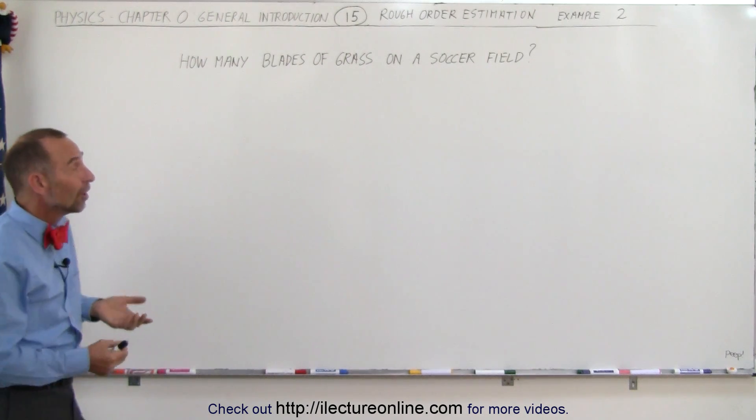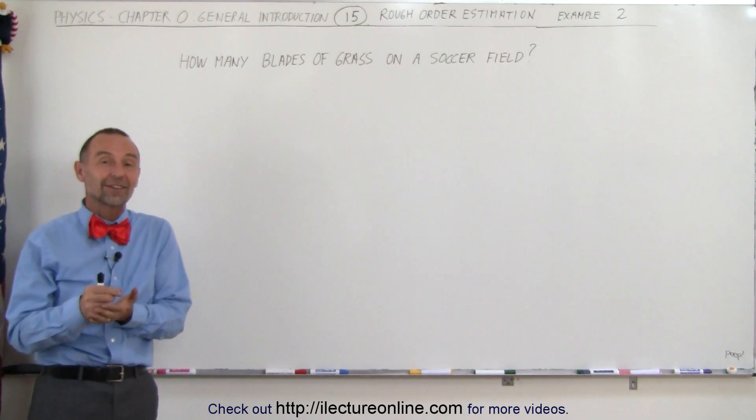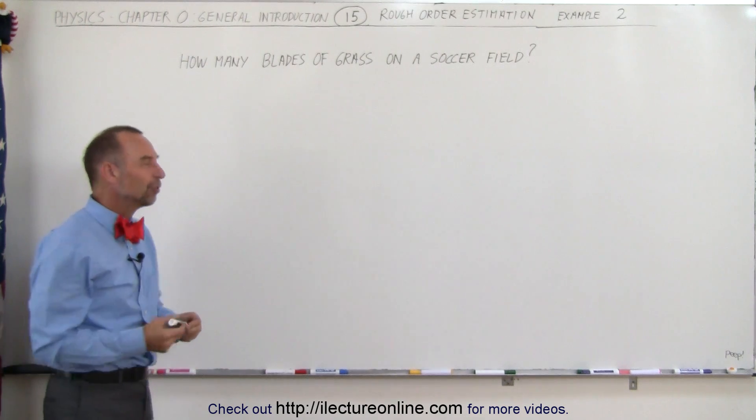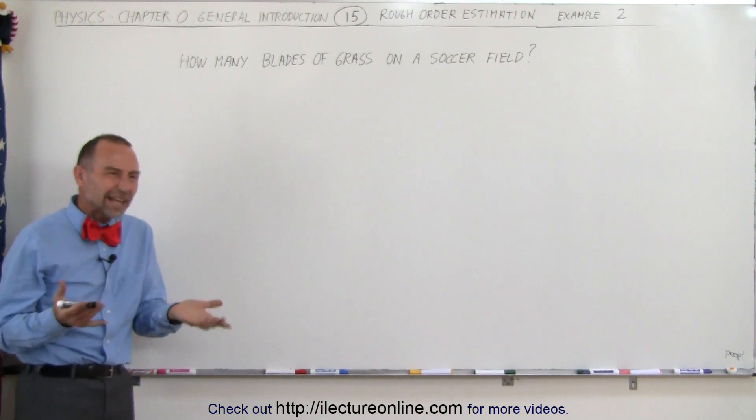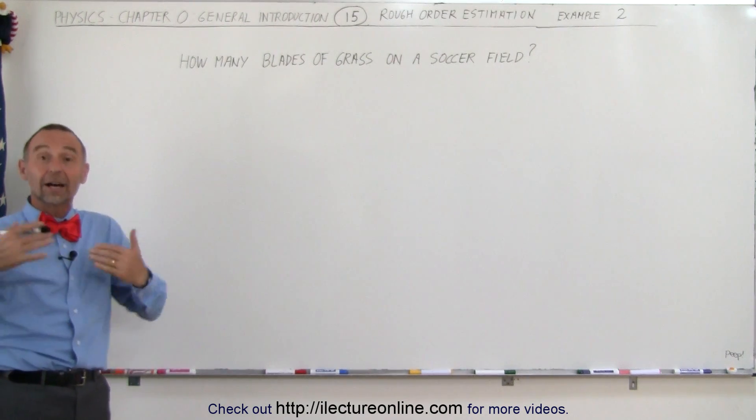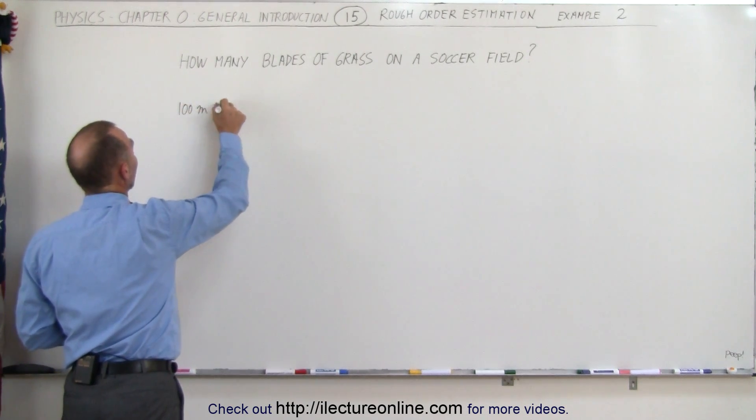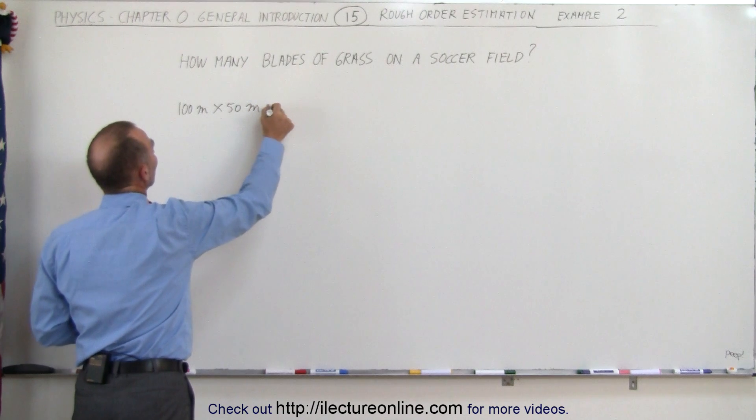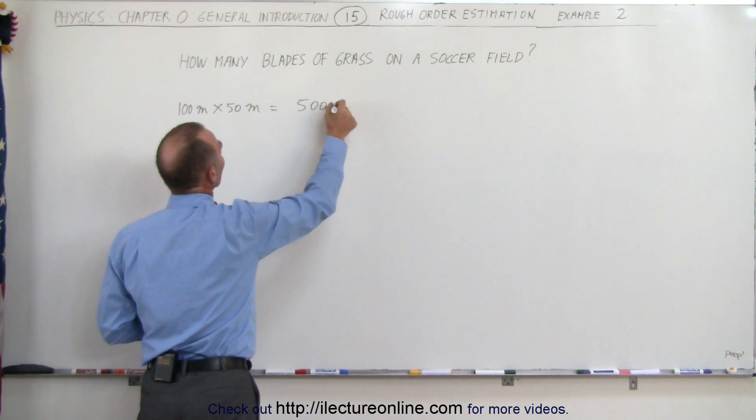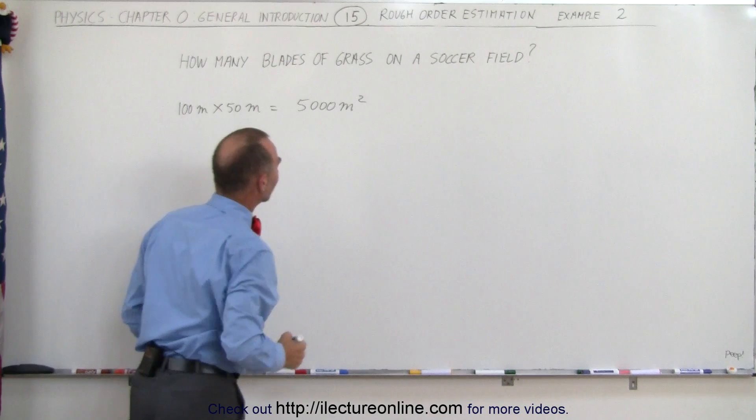So let's try to estimate the number of blades of grass on a soccer field. Well, first of all, the soccer field is on average about 50 meters wide and 100 meters long. So we have 100 meters times 50 meters, which means that the area is about 5,000 square meters of grass.